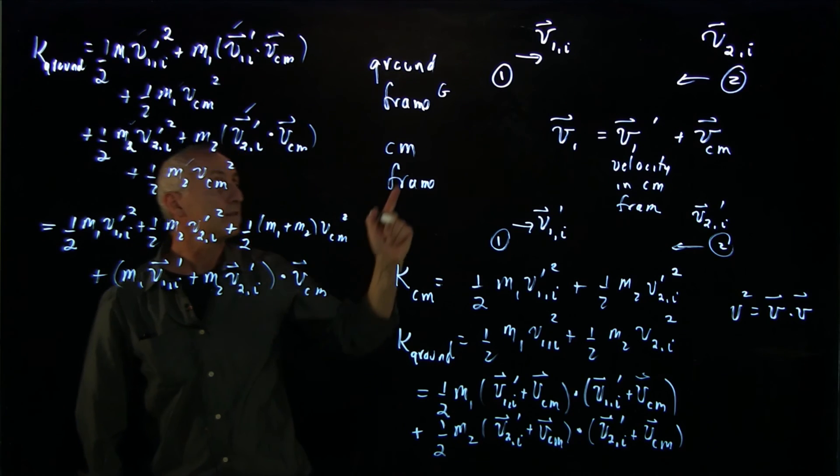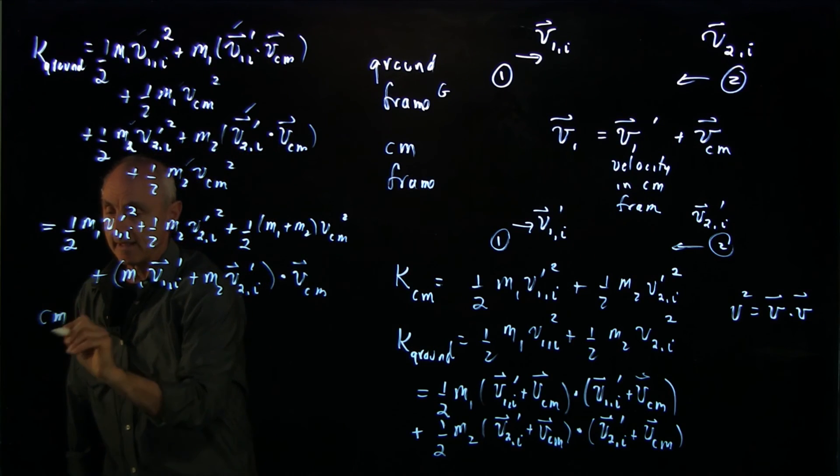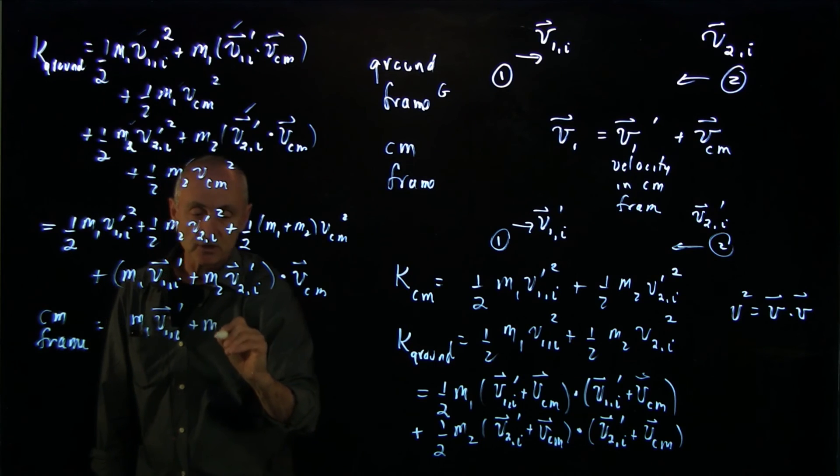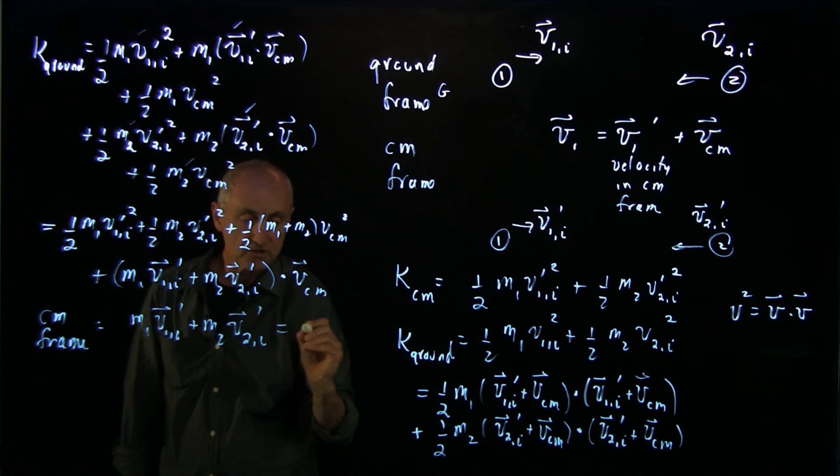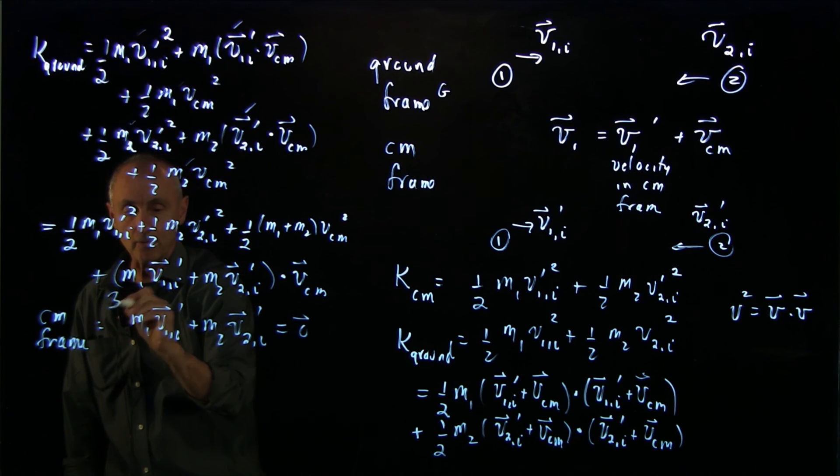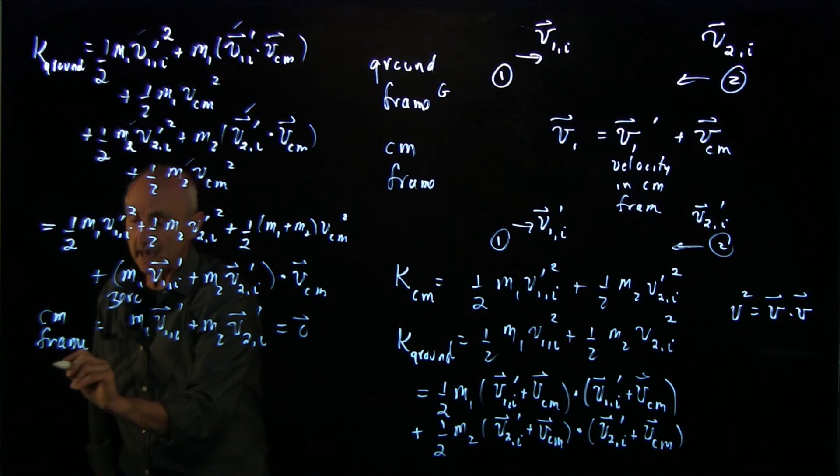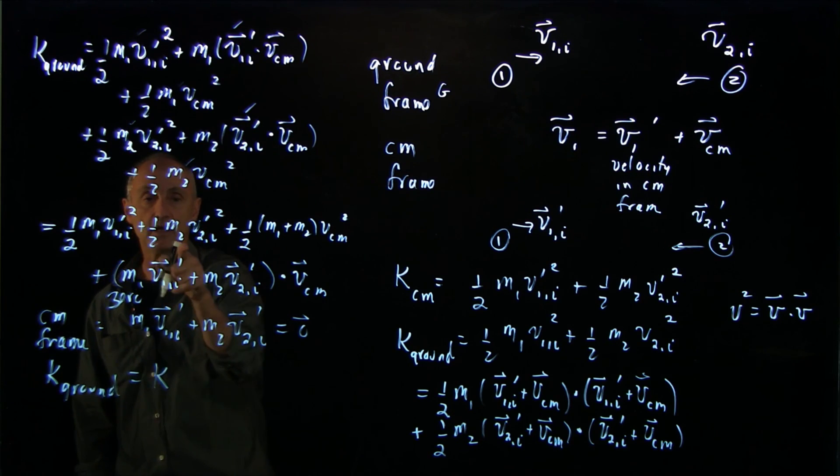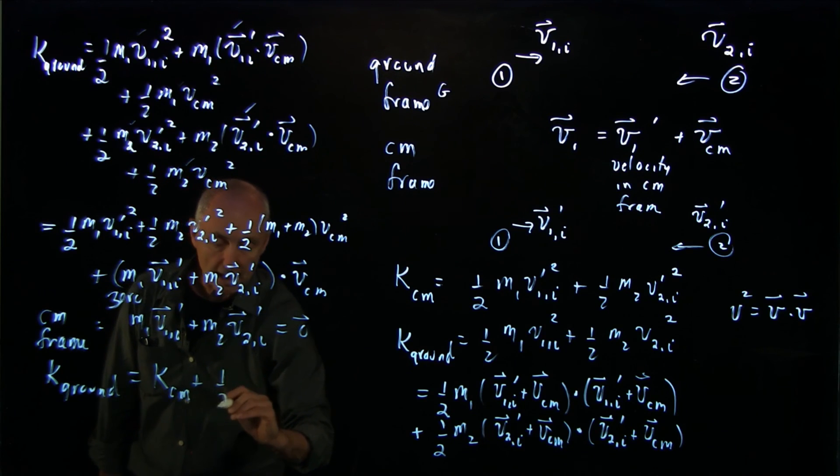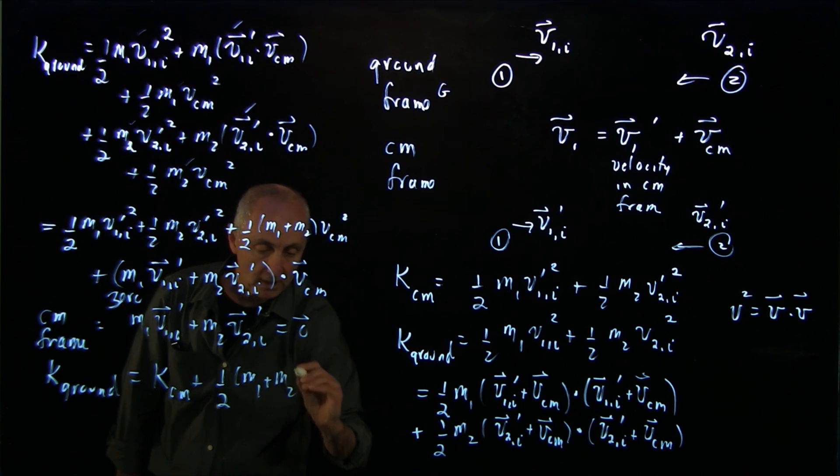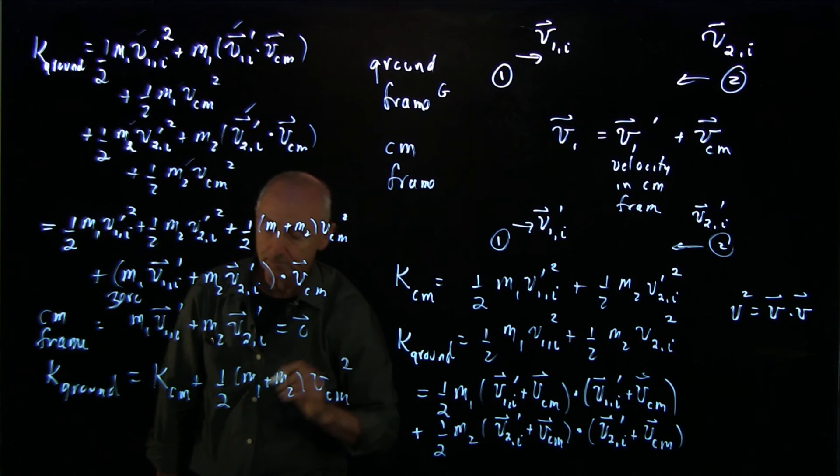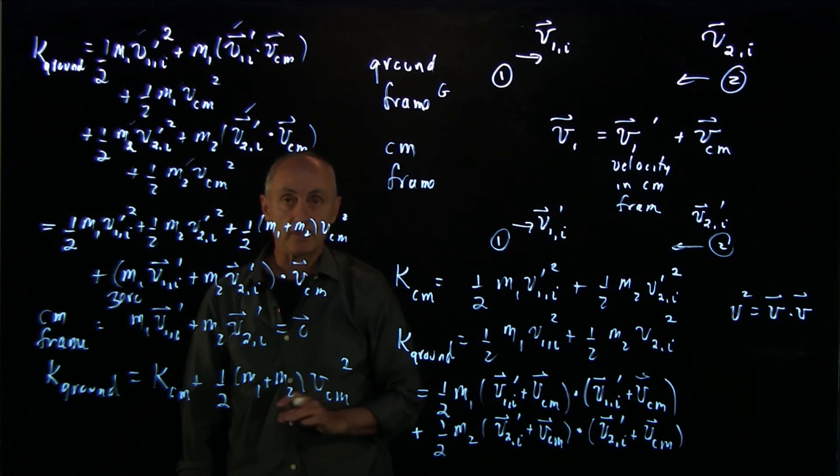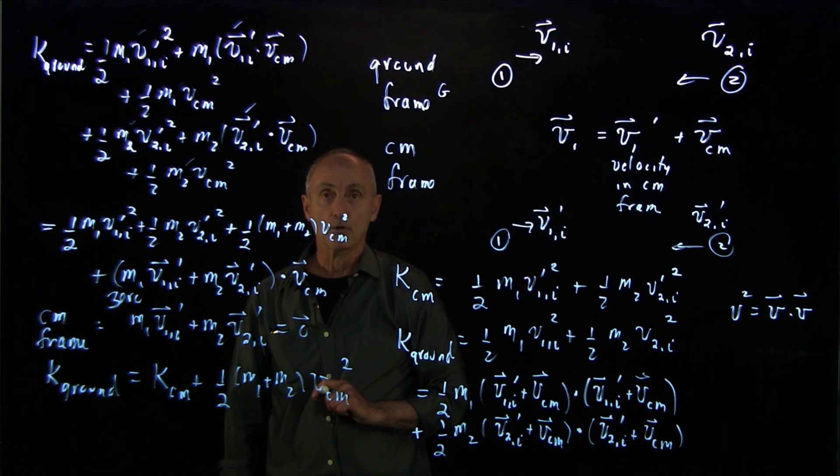But recall that the center of mass reference frame is defined by the condition that the total momentum in that frame is 0. So this term is 0. And thus we get that the kinetic energy in the ground frame is equal to the kinetic energy in the center of mass frame, plus 1 half m1 plus m2 times vcm squared. And that's how kinetic energy is in different reference frames. The next thing we'll look at is how that changes when we have a collision.